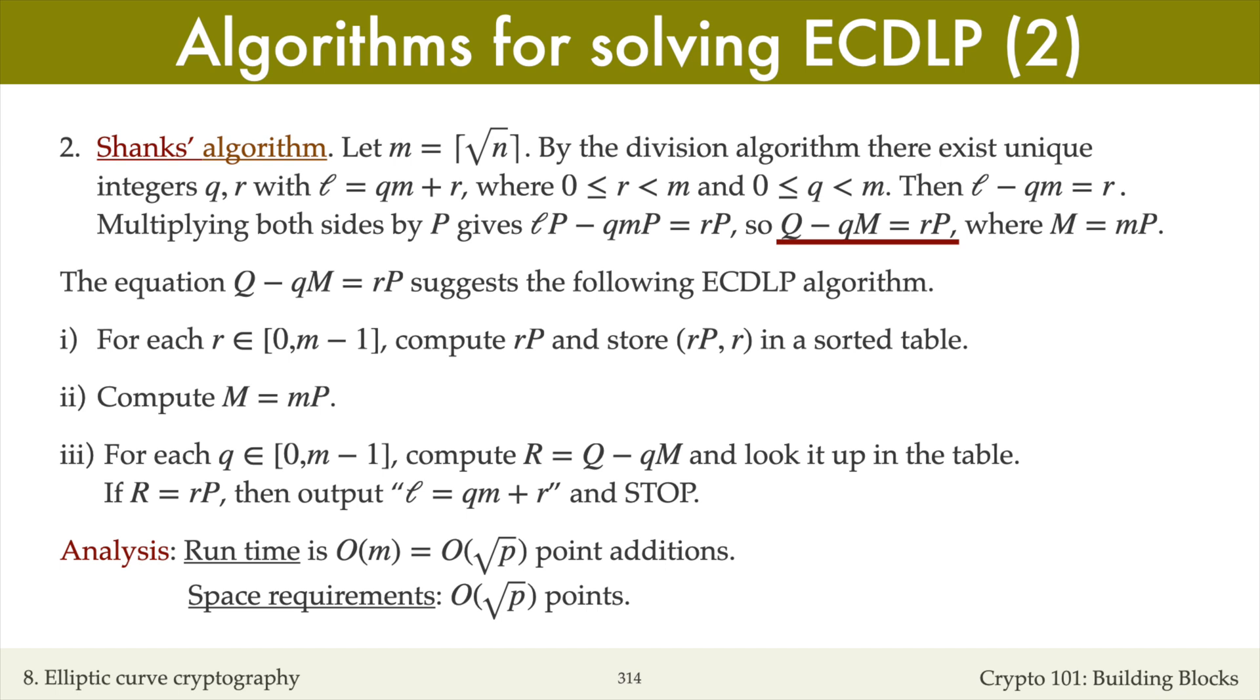The drawback of Shanks' algorithm is its very large storage cost of big O of square root of p points for the table in step 1.